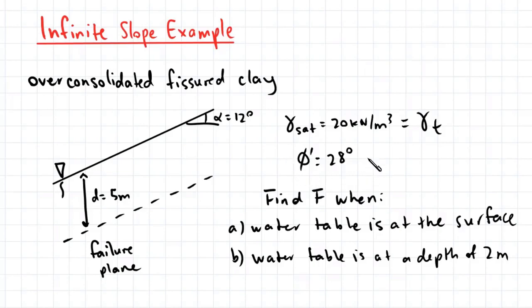We can also assume this to be the same as our total unit weight. The friction angle of the soil is 28 degrees and we're interested in finding a factor of safety when a) the water table is at the surface as well as b) when the water table is at a depth of 2 meters.